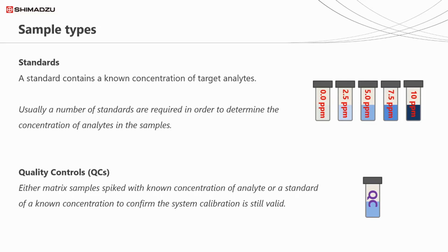QCs tend to be made from a blank matrix, where the target analytes are then spiked in to create a certain concentration. For example, in the analysis of pesticides in sediment, a sample of sediment known to be free of pesticides is spiked with a specific amount of pesticide, so that it mimics the response of a real-world sample, rather than a clean solvent mixture containing pesticides.